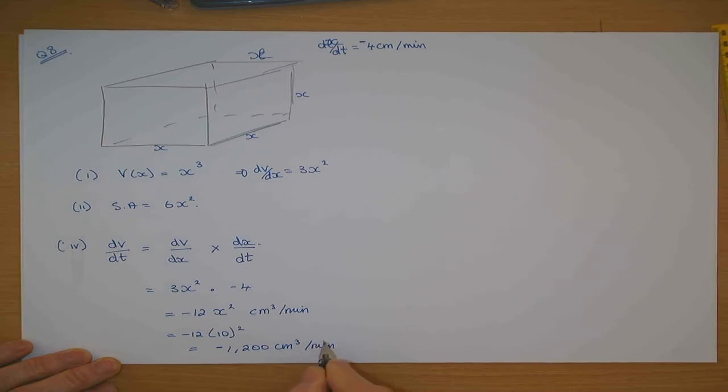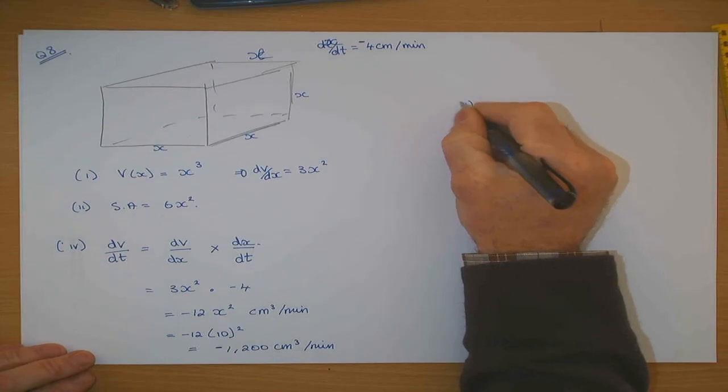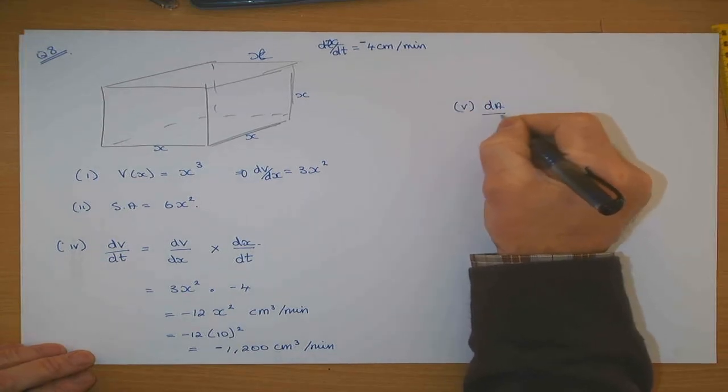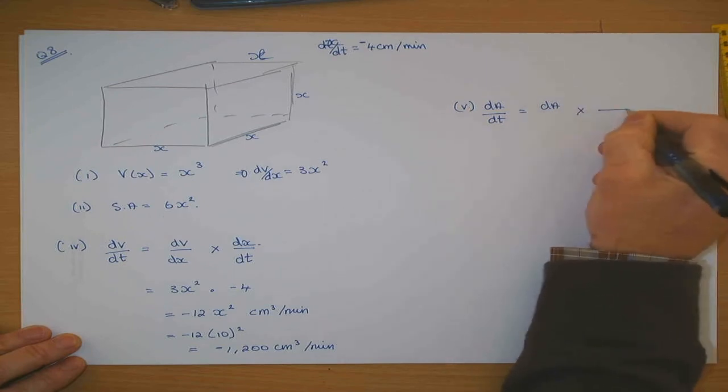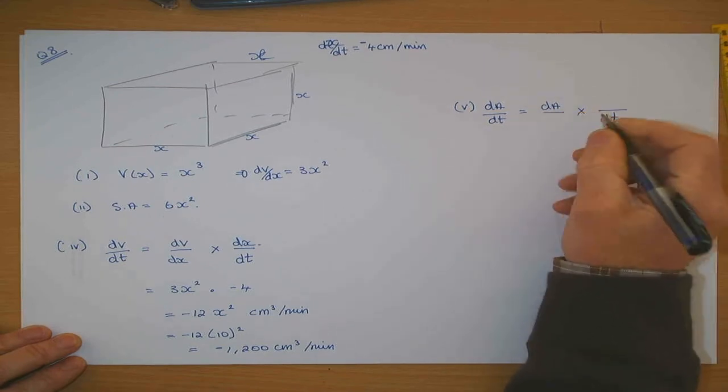The rate at which the surface area is also decreasing is dA/dt. How will I work out dA/dt? It's a chain rule: dA/d-something by d-something/dt. What will I put in? dx.